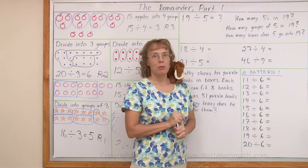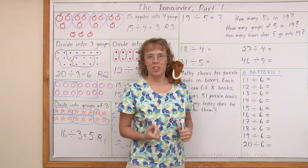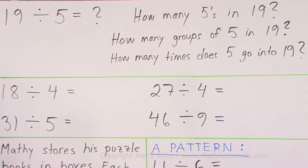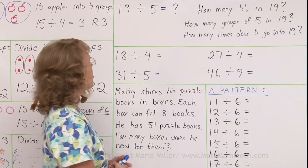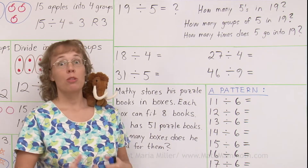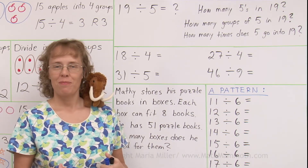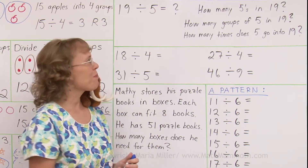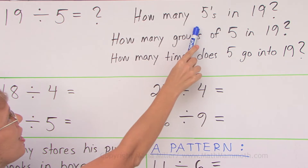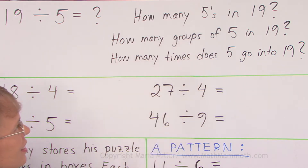Now we're going to look at problems where we don't have pictures to help us. 19 divided by 5. And this is how you can think about it. Maybe we have 19 kids and we need to make groups of 5. How many groups will we get? Think — how many fives are there in 19?